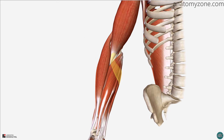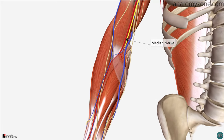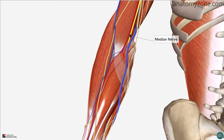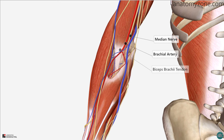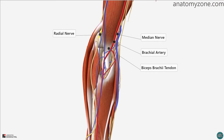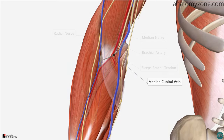So let's take a look at some of the contents of the cubital fossa. From medial to lateral, you have the median nerve, the brachial artery, the biceps brachii tendon, the radial nerve, and in the roof, you have the median cubital vein.